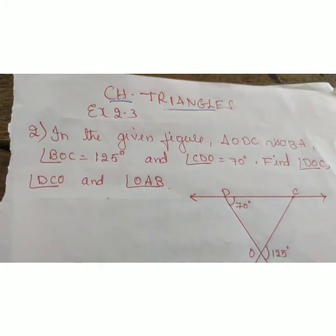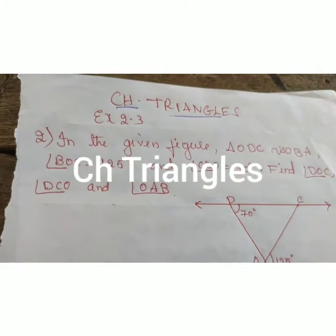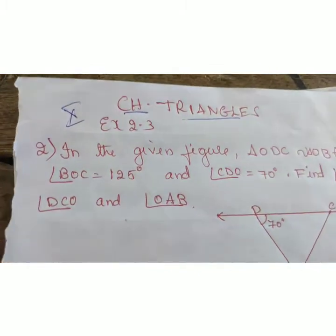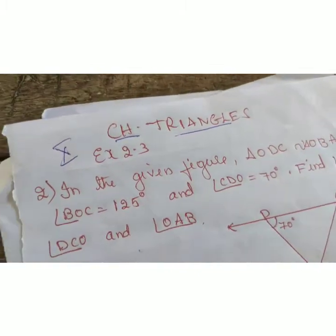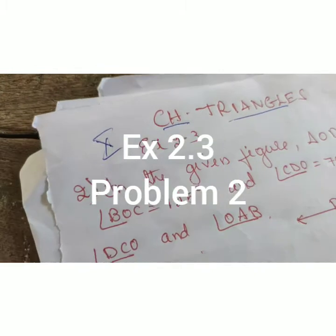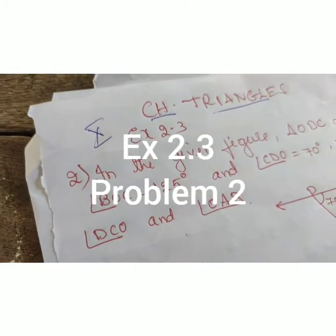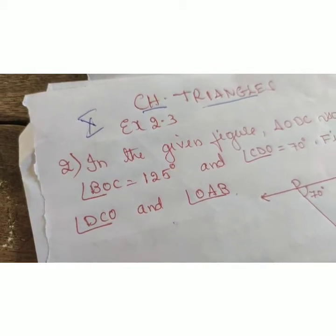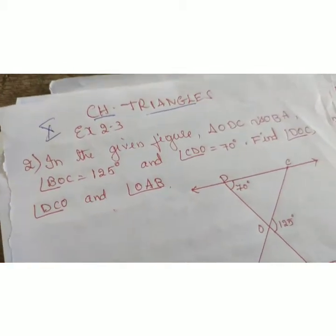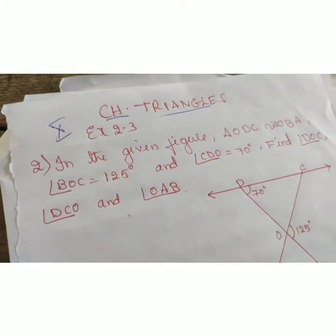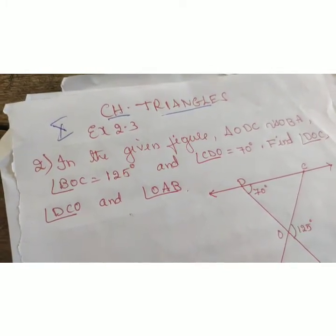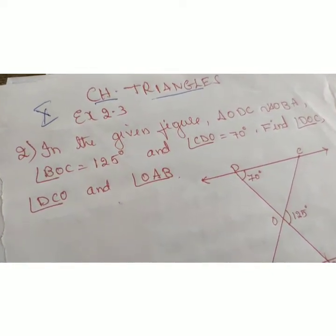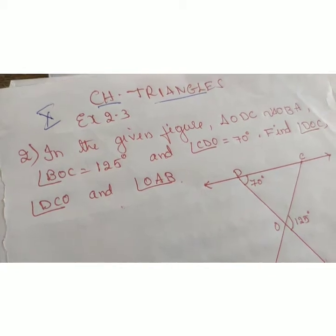Namaste students, welcome to the Mathematics class of 10th standard. In chapter Triangles, we are dealing with Exercise 2.3. The first problem was to identify whether two triangles were similar, and if so, based on which criterion out of the three: AAA, SSS, and SAS. By applying which criterion they were similar was the question in the first problem.